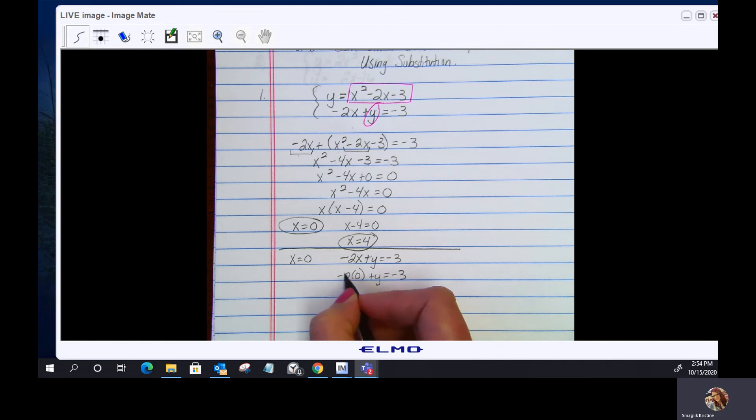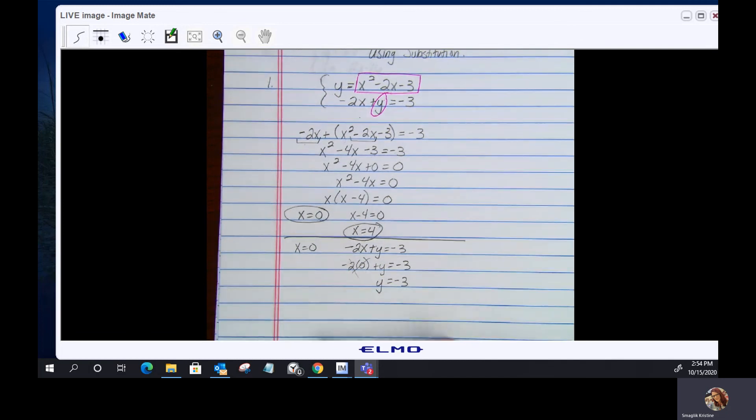We're going to find out what y is. Negative 2 times 0 plus y equals negative 3. Well, this goes down to 0, so I'm left with y equals negative 3. So therefore, one of my solutions is the ordered pair 0, negative 3.